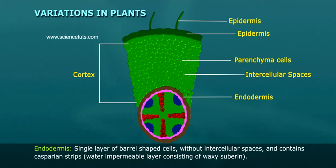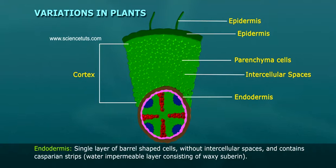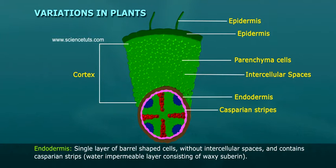Endodermis is a single layer of barrel-shaped cells without intercellular spaces and contains casparian stripes. It is a water-impermeable layer consisting of vaxy subarine.